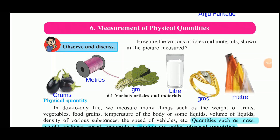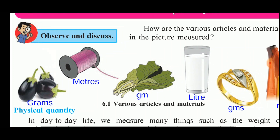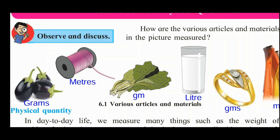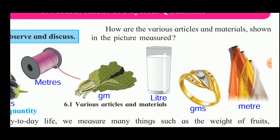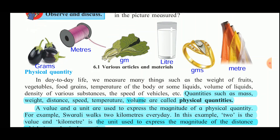The next chapter is measurement of physical quantities. The first question is how are the various articles and materials shown in the picture measured? You can see in the pictures that grains are measured in grams, the length of thread is measured in meters, vegetables are also measured in grams, milk in a glass is measured in liters, gold is measured in grams or milligrams, and the length of cloth is measured in meters.